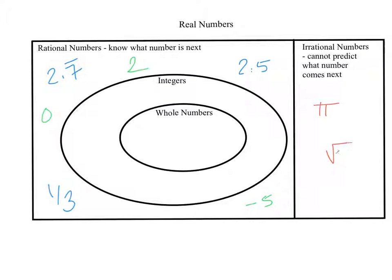Square roots are also irrational. The square root of 2 is irrational because if you plug that in a calculator it gives you all these decimals with no pattern, and even though it stops on your calculator it actually keeps going forever. But be careful — if I had the square root of 4, that is rational because the square root of 4 simplifies to just 2, and 2 is done. So: rational numbers — you know what comes next. Irrational — you can't predict the next thing. Think pi and square roots that can't be simplified.